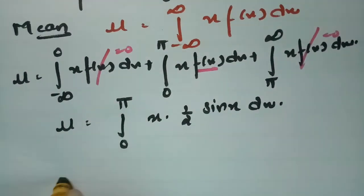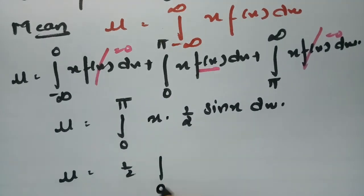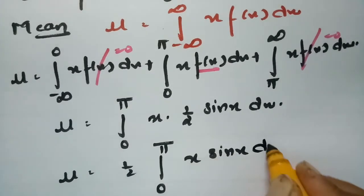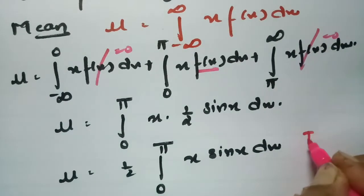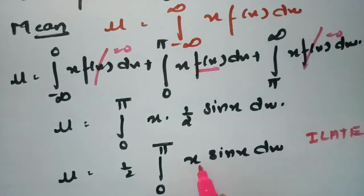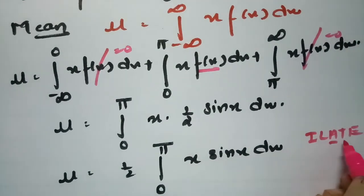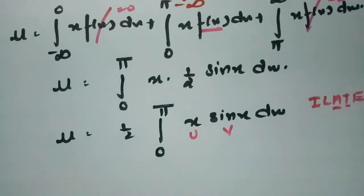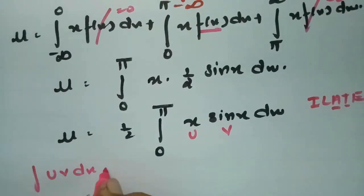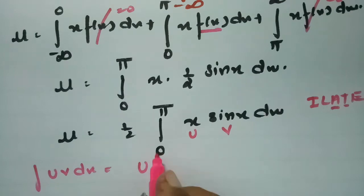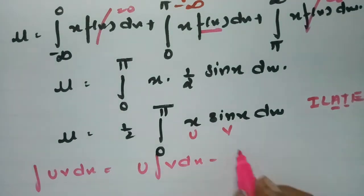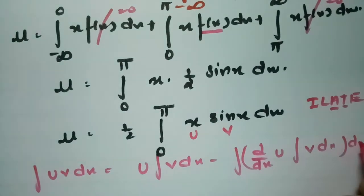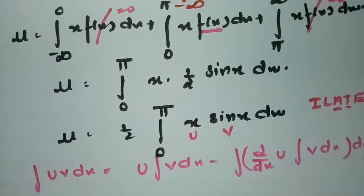Bringing the 1/2 outside: μ = (1/2)·integral from 0 to π of x·sin(x) dx. Since x is algebraic and sin(x) is trigonometric, we apply integration by parts: integral of u·v dx = u·(integral v dx) − integral[(d/dx of u)·(integral v dx)] dx.